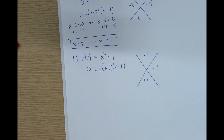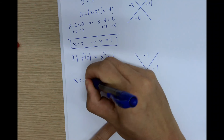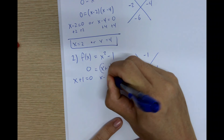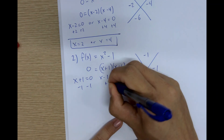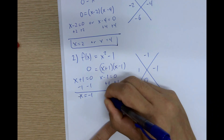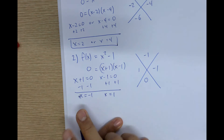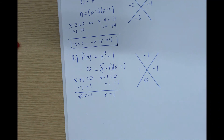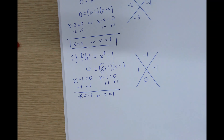You're making a shortcut by identifying the pattern. Setting x plus 1 equal to 0 and x minus 1 equal to 0, we get x equals negative 1 or x equals positive 1. That's our answer.